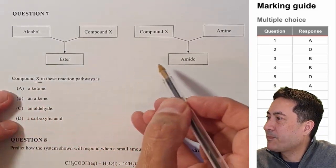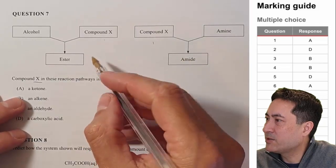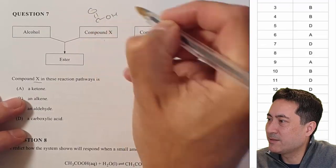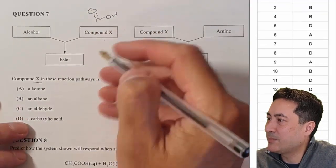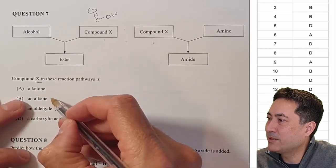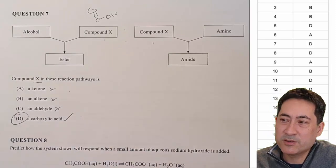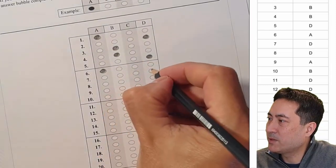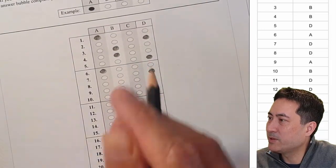Question seven. This one's a little too easy because you should know these reactions super well. Alcohol plus a carboxylic acid gives an ester — you could just leave it at that. Double check: that's how you get an amide, there's no way it could be any of those others. That one's just a write-off because you've memorized your reactions. Super easy reaction question.